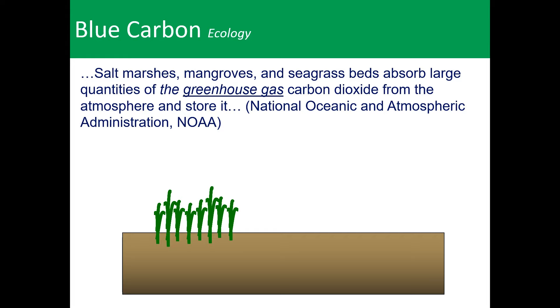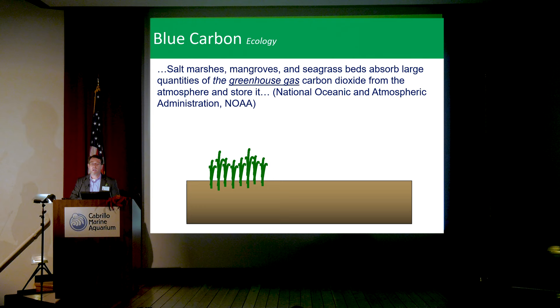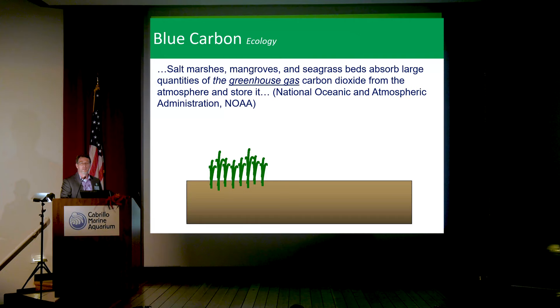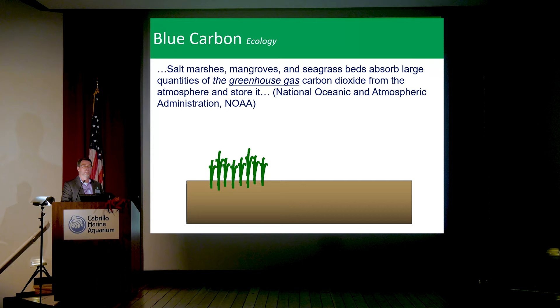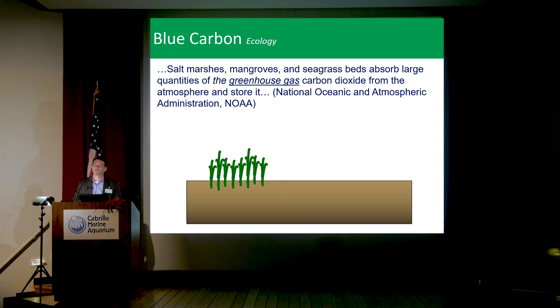Blue carbon is the carbon stored in coastal wetland environments — the carbon stored in the vegetation and soils of ecosystems like salt marshes, mangroves, and seagrass beds. These are coastal wetland ecosystems known to absorb large quantities of the greenhouse gas carbon dioxide from the atmosphere and store it for long periods of time — on the scale of centuries if not millennia.